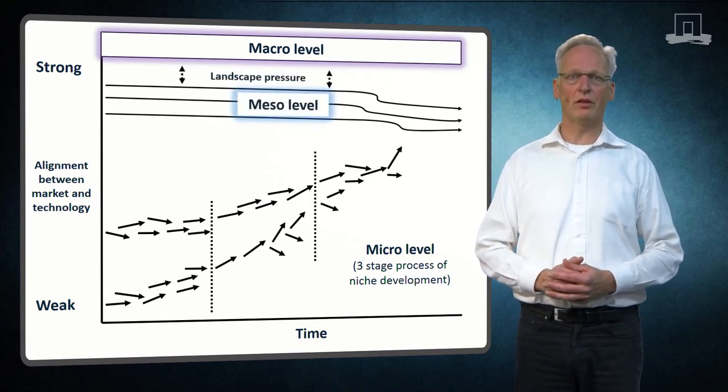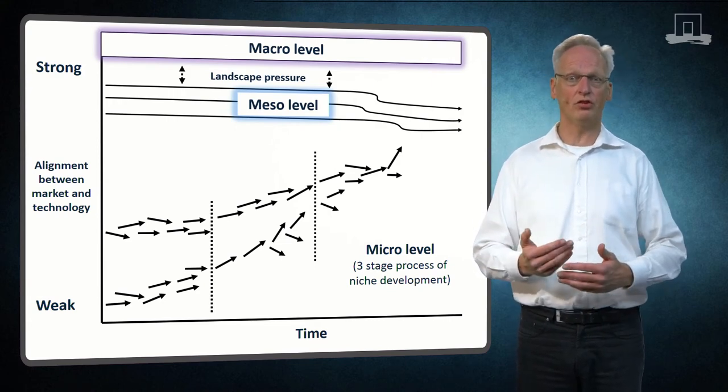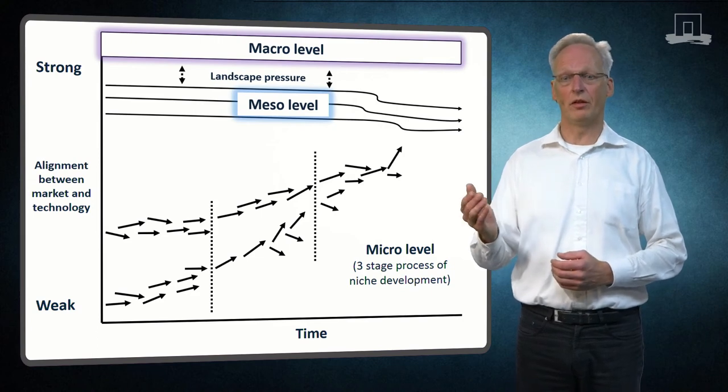Pressure from the general landscape level factors may either stimulate or hinder changes in the so-called regimes, the middle layer of the model.